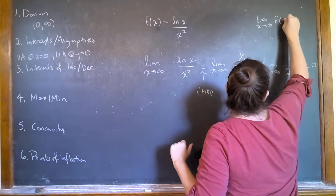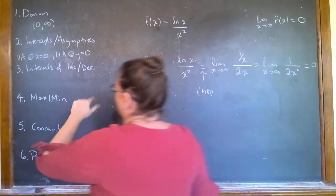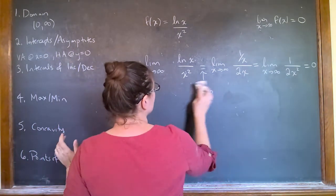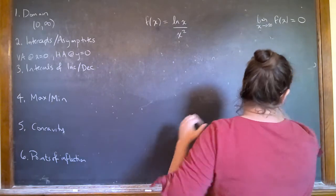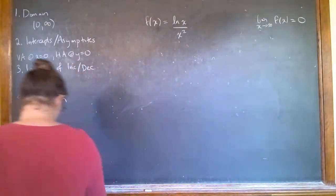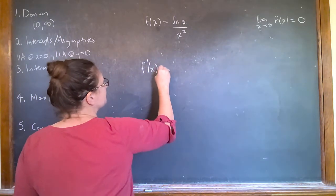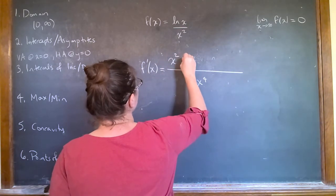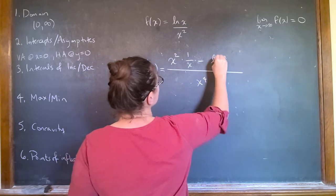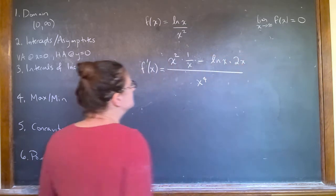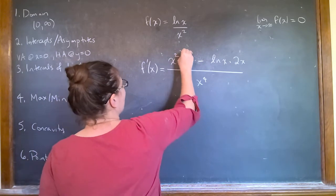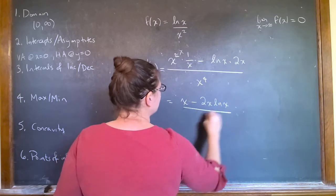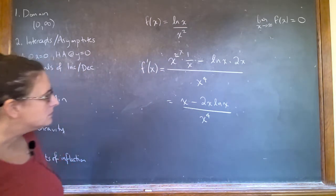So I could write that up here to remind myself what the limit is. But I don't have to if I don't want to because I have it written here. Now, in order to figure out the next stuff, I want intervals of increase and decrease. So I'm going to take the derivative. So the bottom times the derivative of the top minus the top times the derivative of the bottom.